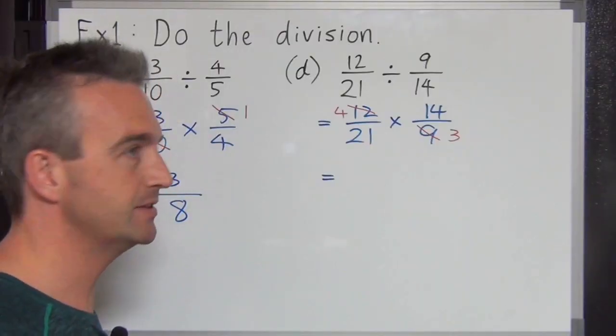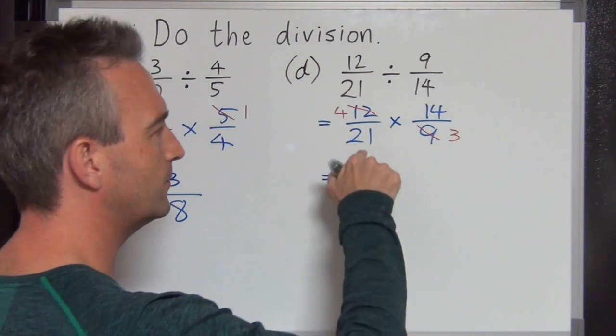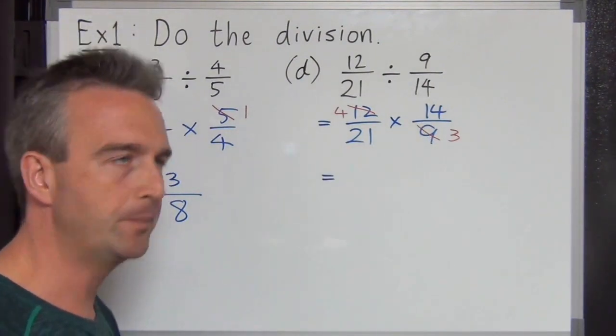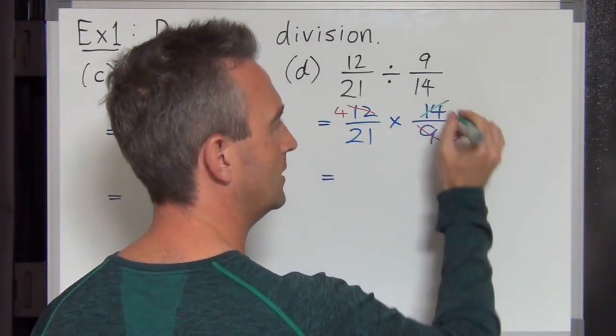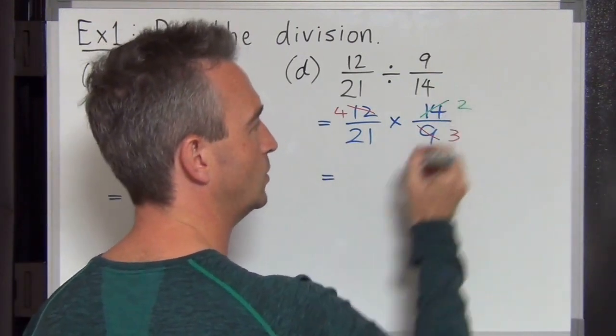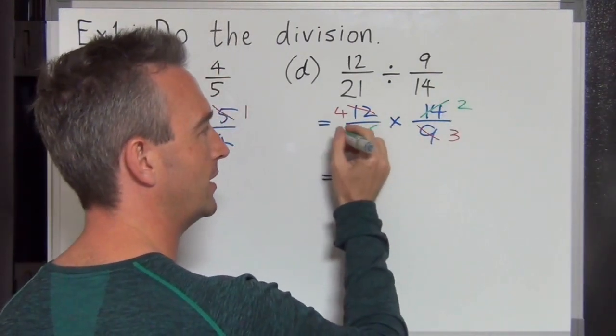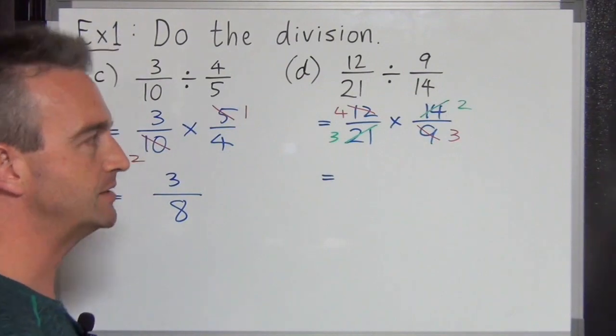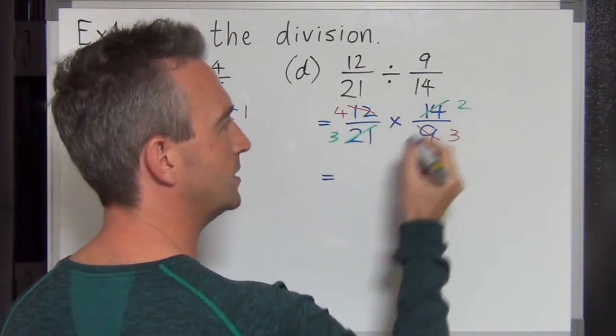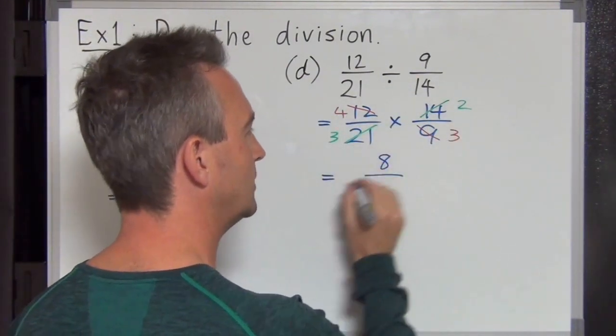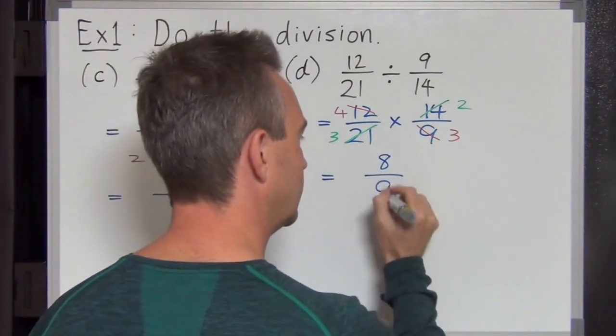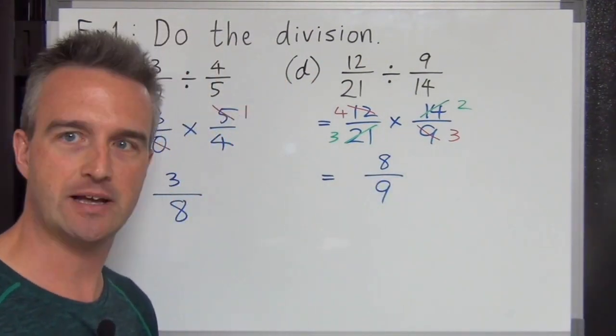You can cancel more there first. Are you half asleep again or what? Oh we can too. I think that just saved me. 14 and 21. They're both divisible by 7. How did I not see that? 7 goes into 14 twice and 7 goes into 21 three times. Now let's finish this off. 4 times 2 on the top is 8 and on the bottom 3 times 3 is 9. Final answer 8 over 9. How did I miss that?